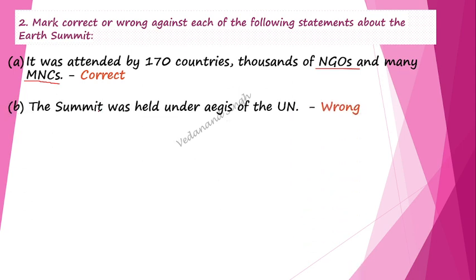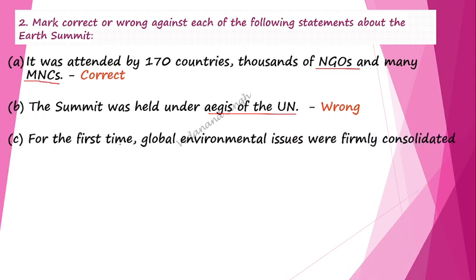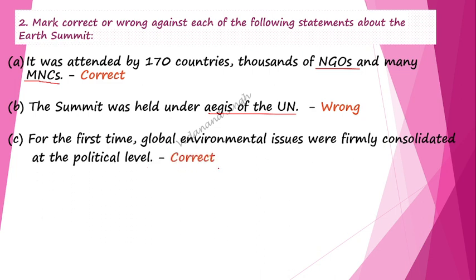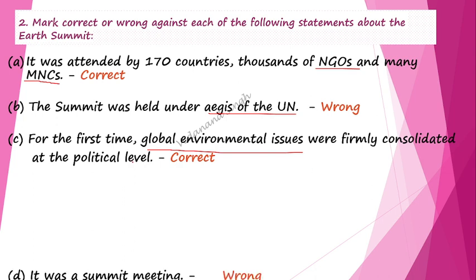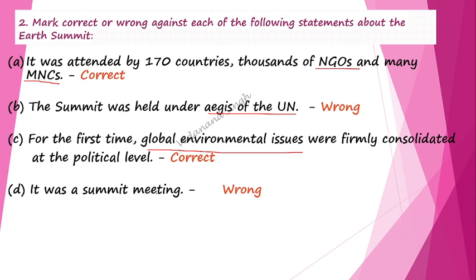The next statement says the summit was held under the aegis of a UN agency — this is a wrong statement. The following statement says for the first time global environmental issues were firmly consolidated at the political level — yes, this is correct, it happened for the first time in 1992. The last statement claims the Earth Summit was only a summit meeting — this is also incorrect, as it had various agendas related to environmental issues.